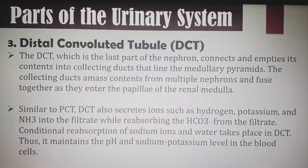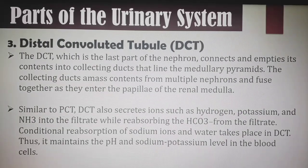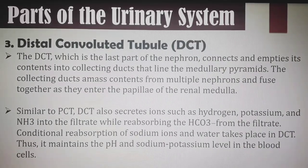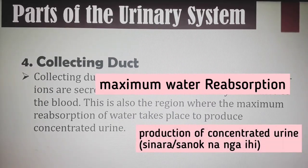The distal convoluted tubule (DCT) is the last part of the nephron. It connects and empties its contents into collecting ducts that line the medullary pyramids. Similar to the PCT, the DCT also secretes ions such as hydrogen, potassium, and ammonia into the filtrate while reabsorbing bicarbonate. Conditional reabsorption of sodium ions and water takes place in the DCT, maintaining pH and sodium-potassium levels. The collecting duct is a long straight tube where hydrogen and potassium ions are secreted to maintain electrolyte balance, and maximum reabsorption of water occurs to produce concentrated urine.